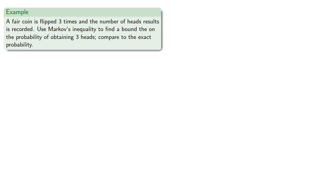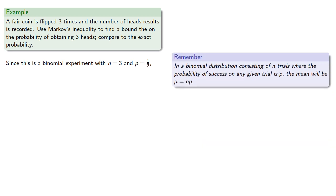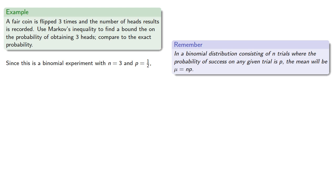Now since this is a binomial experiment with n equals 3 and p equals 1/2, then in a binomial distribution, the mean will be np. And so the expected value of X will be 3 times 1/2, or 1.5.